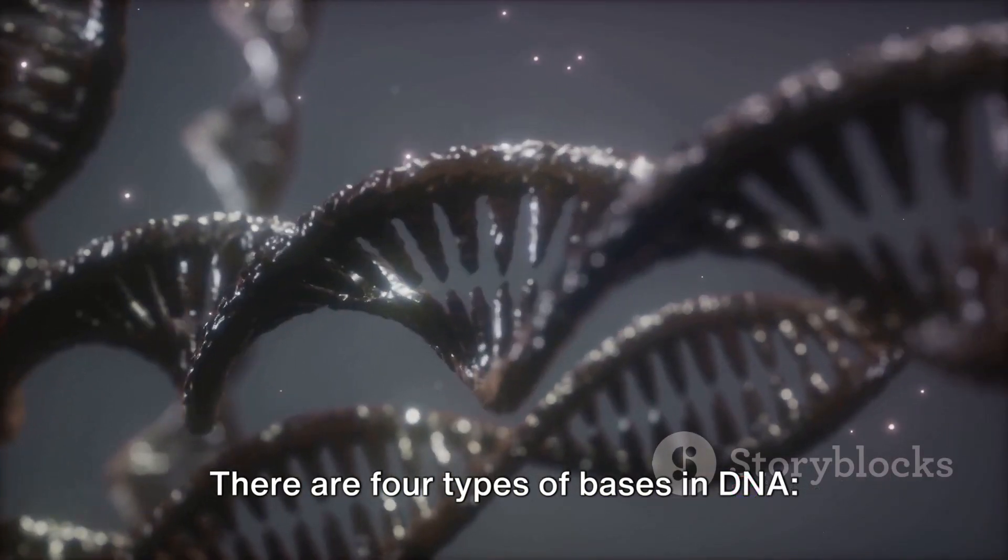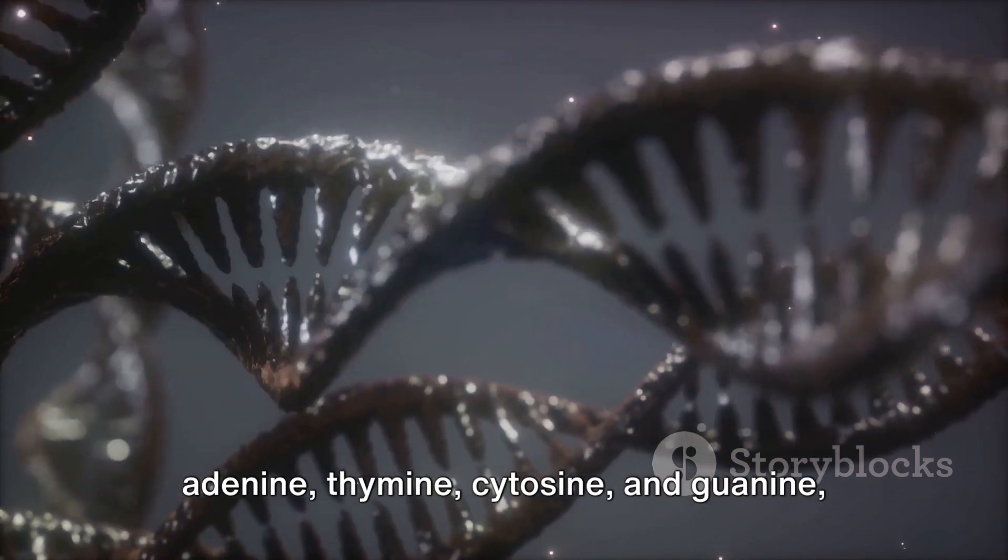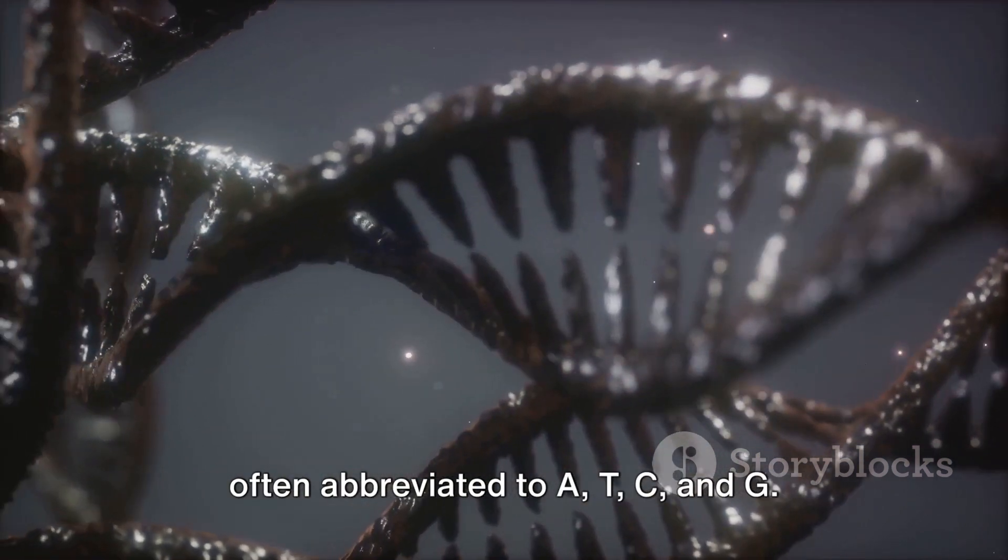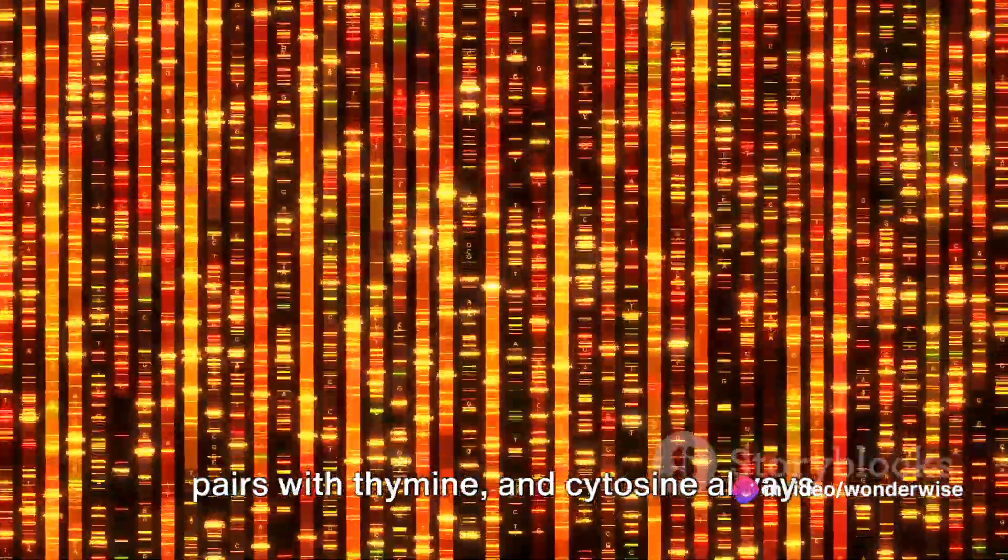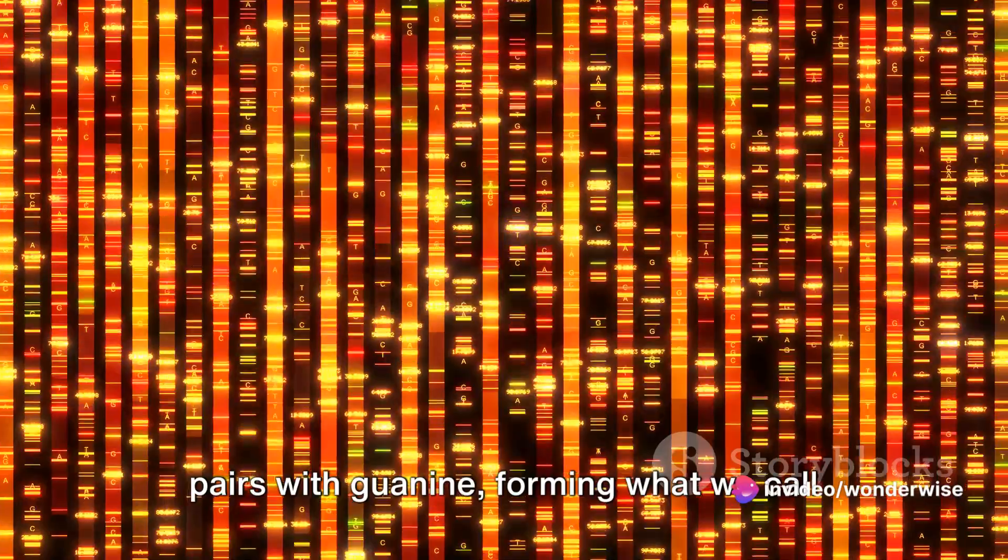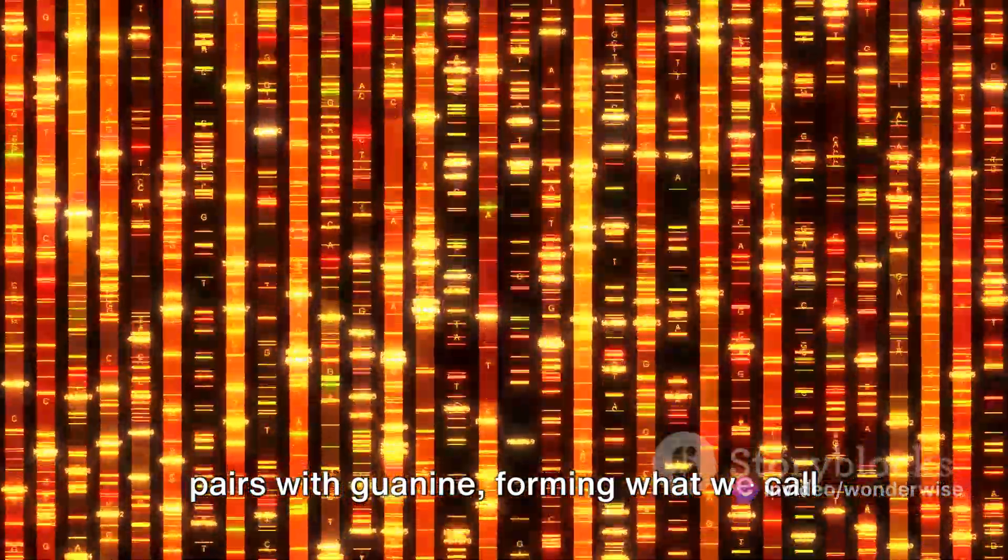There are four types of bases in DNA: adenine, thymine, cytosine, and guanine, often abbreviated to A, T, C, and G. What's fascinating is that adenine always pairs with thymine and cytosine always pairs with guanine, forming what we call base pairs.